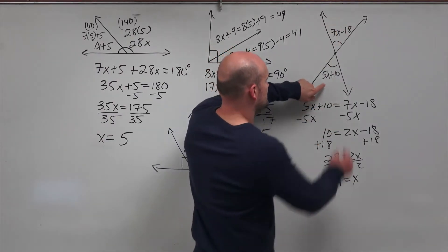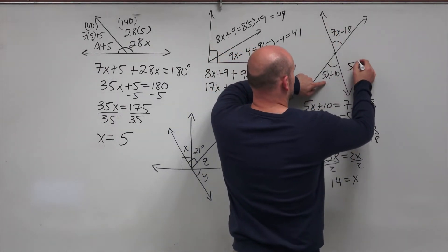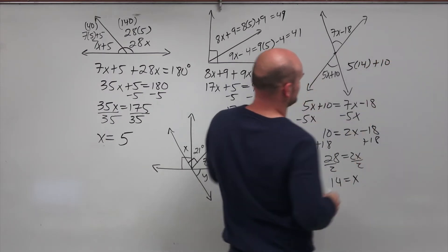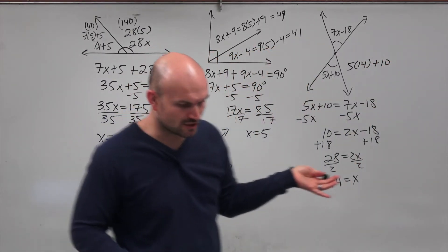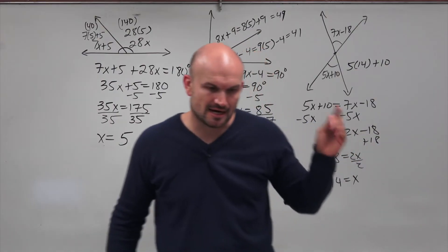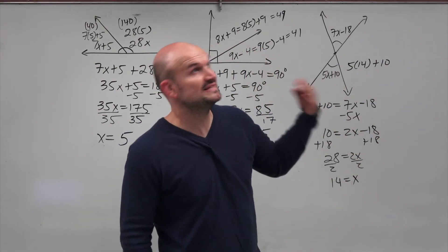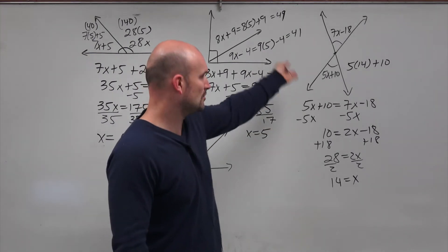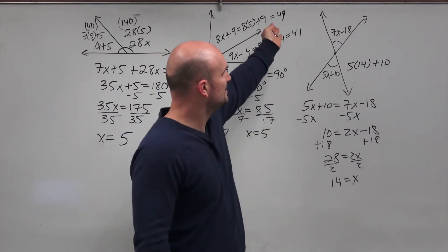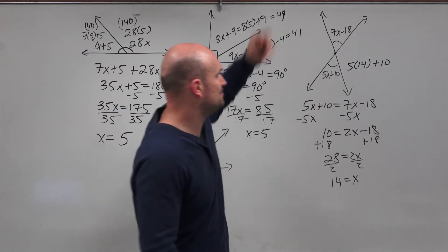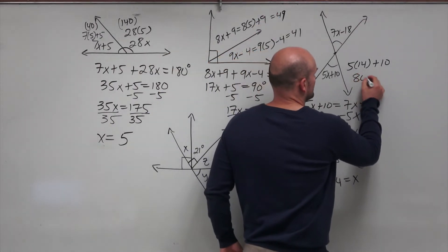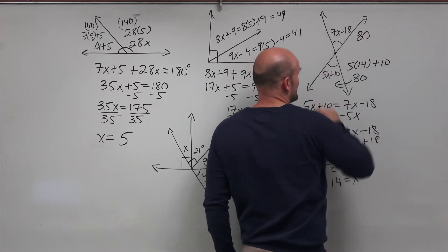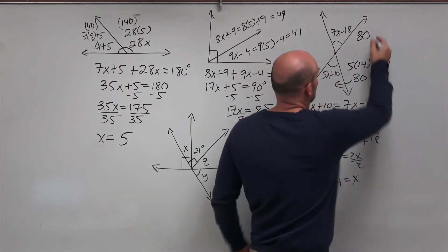Let's find the value of the angle by substituting x = 14. So 5 times 14 plus 10: 5 times 14 is 70, plus 10 is 80. So this angle is 80 degrees, and since they're vertical angles, the other angle is also 80 degrees.